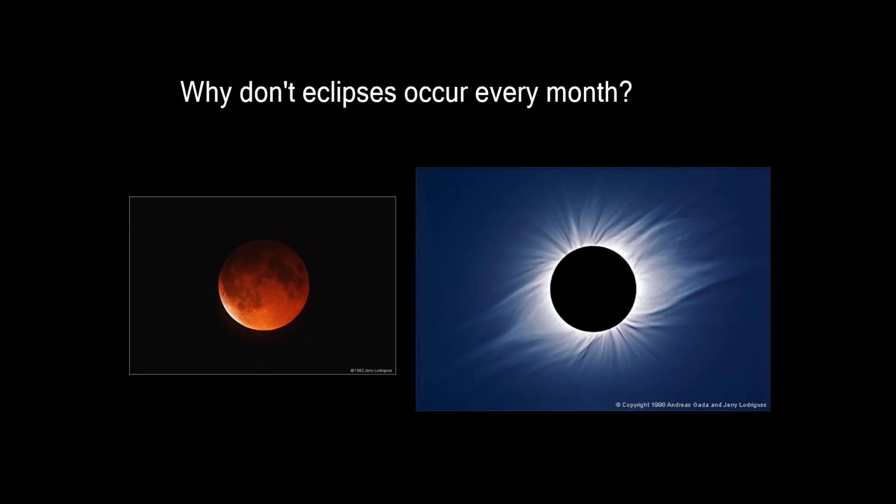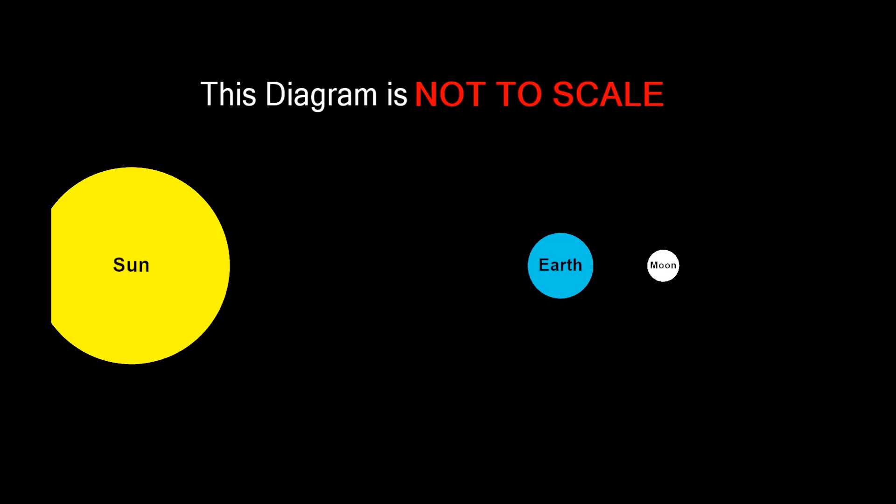An important question when studying moon phases is, why don't eclipses occur every month? This is especially challenging to understand when looking at traditional textbook illustrations with incorrect scale.